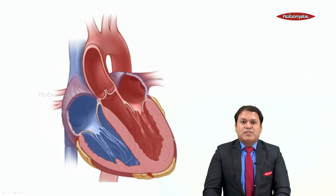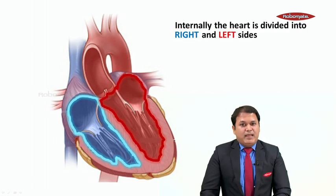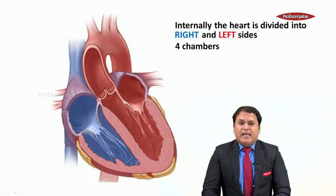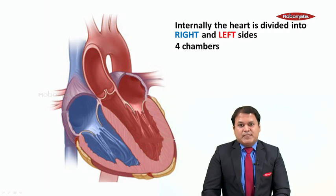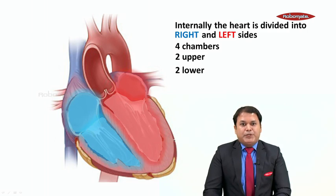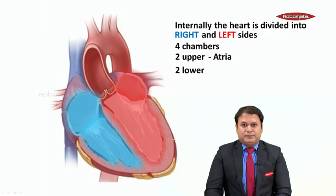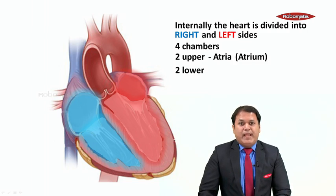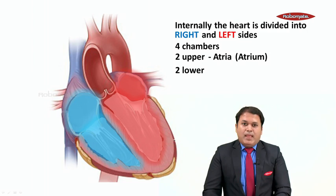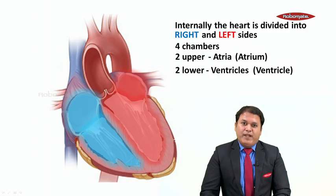Now let us go about to study the internal structure of the heart. Internally the heart is divided into a right side and a left side, and in all there are four chambers inside the heart. As you can see, there are four compartments in the heart which are called as the chambers of the heart. Now there are two upper chambers and two lower chambers. The upper chambers of the heart are called as atria — singular is atrium, plural is atria. And the lower chambers of the heart are called as ventricles, singular ventricle.